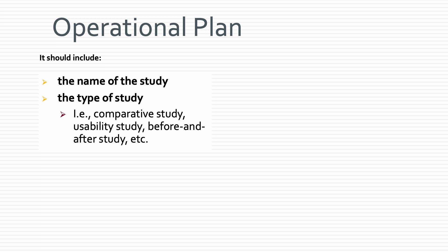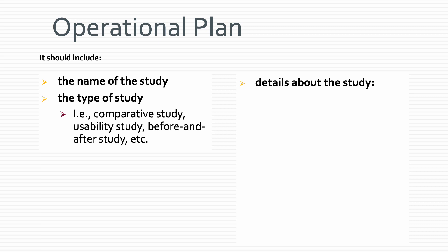It also needs to include details about the study, including the study population. Who is it that you're going to study, or what, but we'll assume it's people. So say you decide you want to find out graphic designers' opinions on accessible websites, or web designers on most accessible websites. That would be your study population.